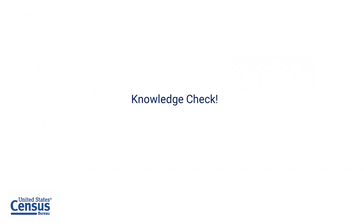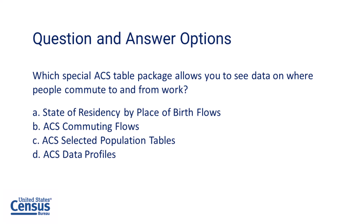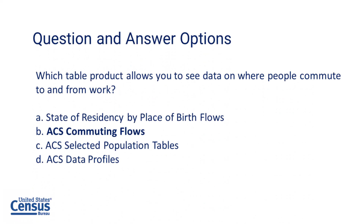Let's take another break for a knowledge check. Which table product allows you to see data on where people commute to and from work? Is it state of residency by place of birth flows, commuting flows, selected population tables, or data profiles? If you said commuting flows, you are correct.